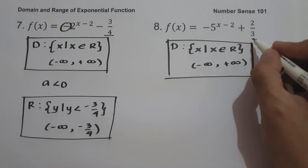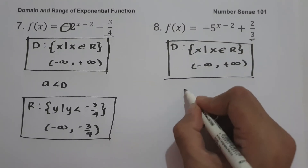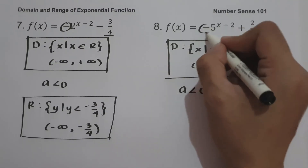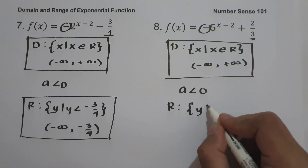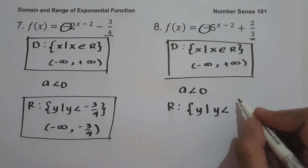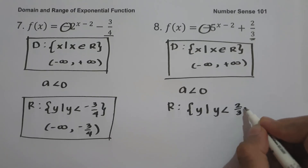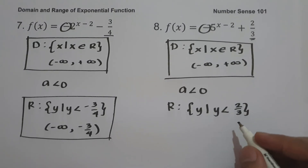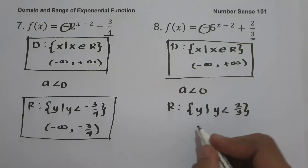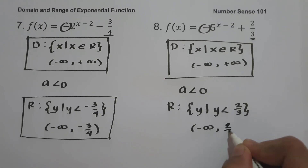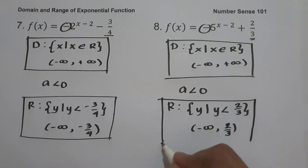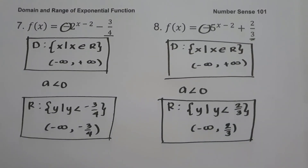Since our horizontal asymptote is 2 over 3 and the value of a is less than 0 because we have a negative sign, our range is the set of y values such that y is less than 2 over 3. In interval notation, from negative infinity up to 2 over 3, where 2 over 3 is not included. I hope you've learned from this video. Thank you so much for watching, and God bless us all.